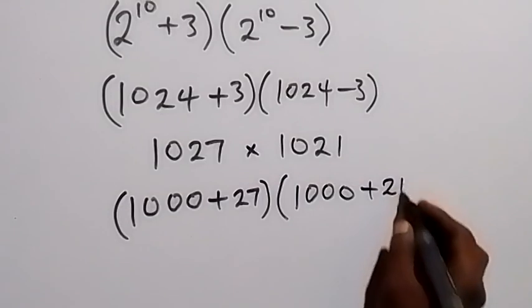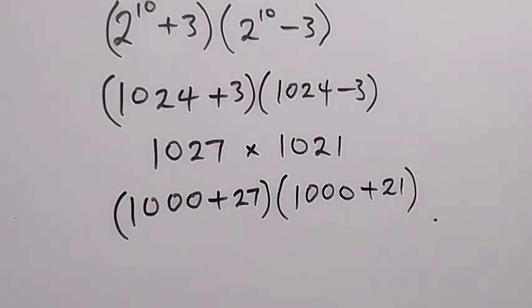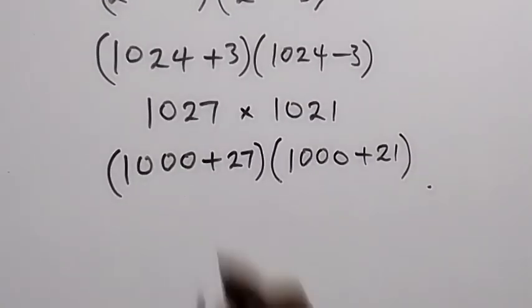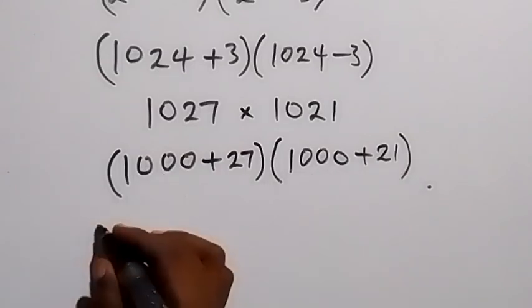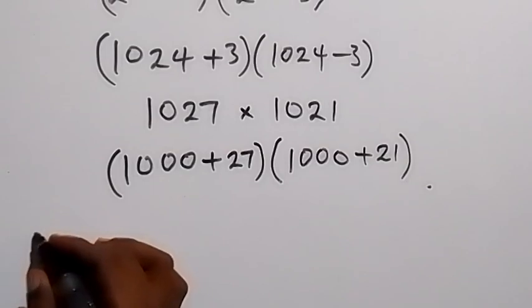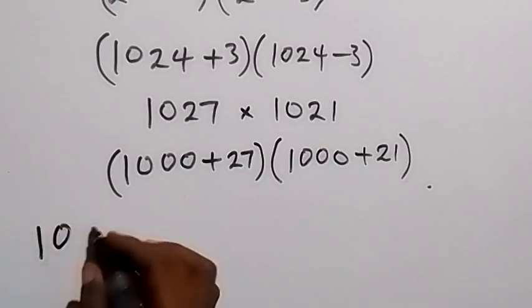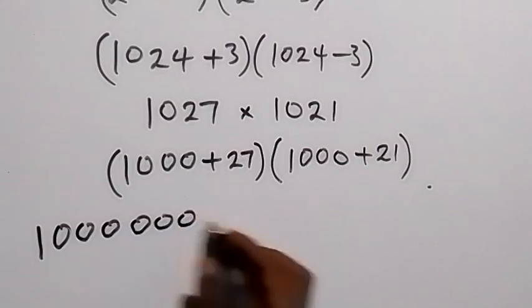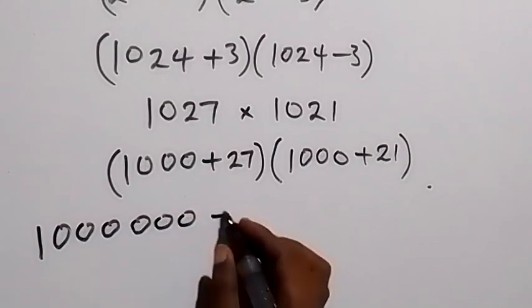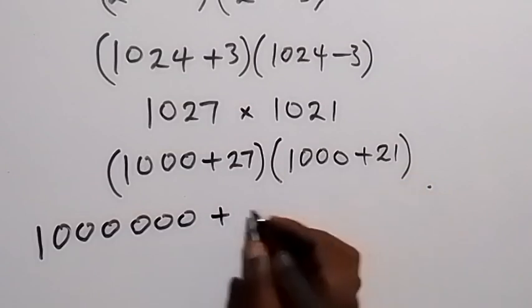When we expand it, we first multiply 1000 times 1000, which gives us 1 million. Then plus 1000 times 21, which gives us 21,000.